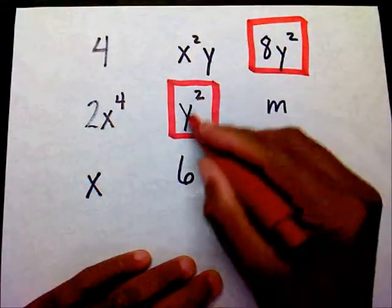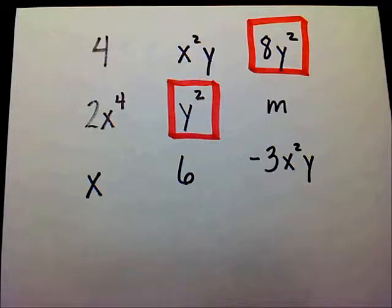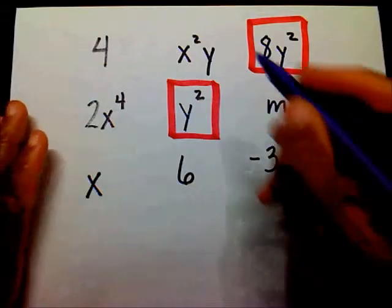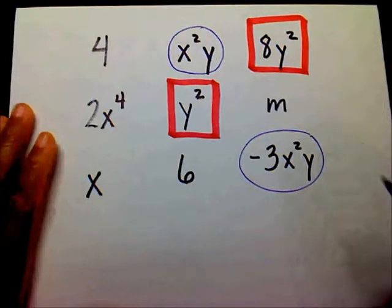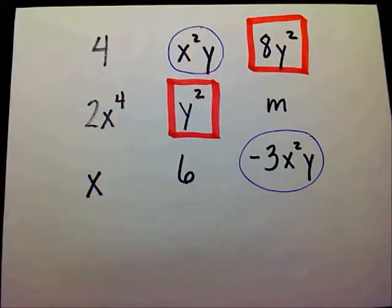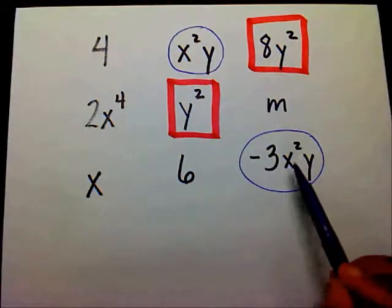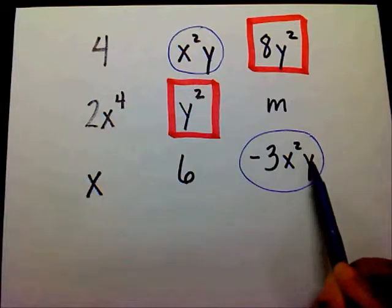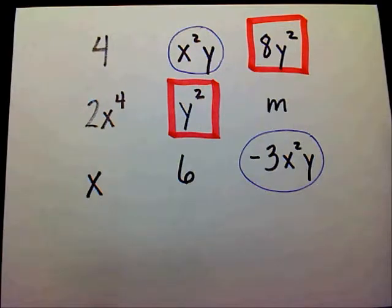Why? Because they both have x squared. Do you think you can pick out the other pair of like terms? Well, this term and this term are like terms because both of them have x squared y. Here you have x squared y, and if you wanted to, we could combine these two, but we're going to talk about it in the next video.